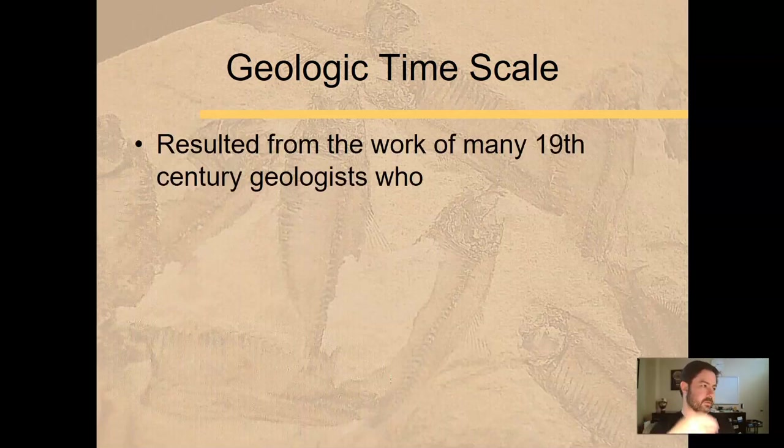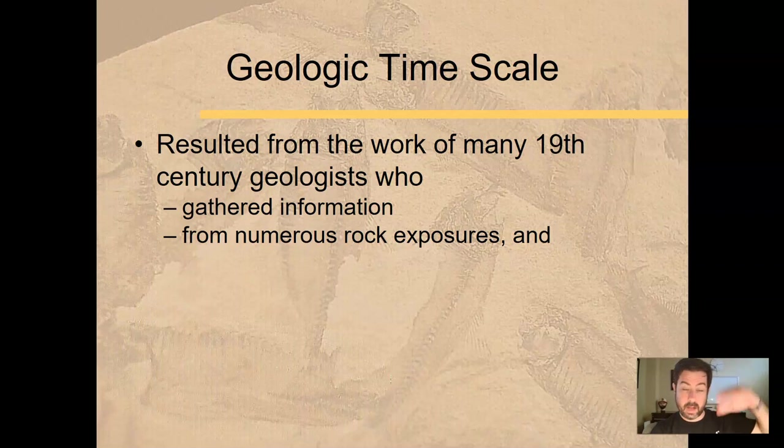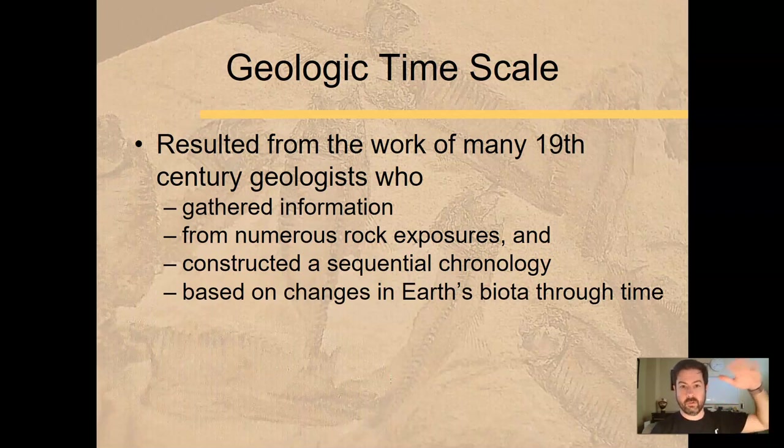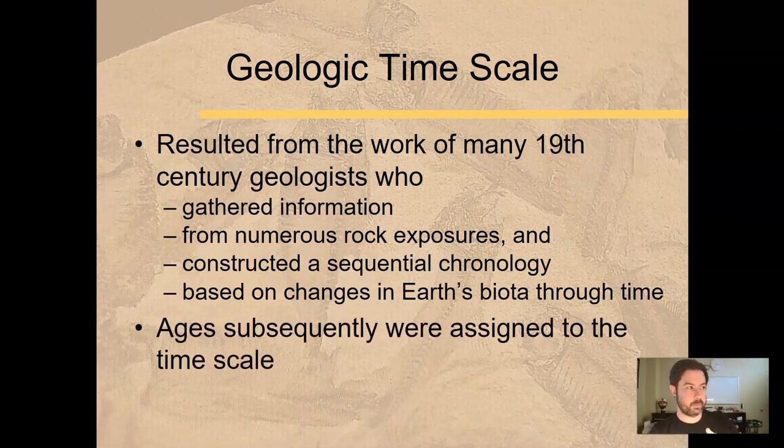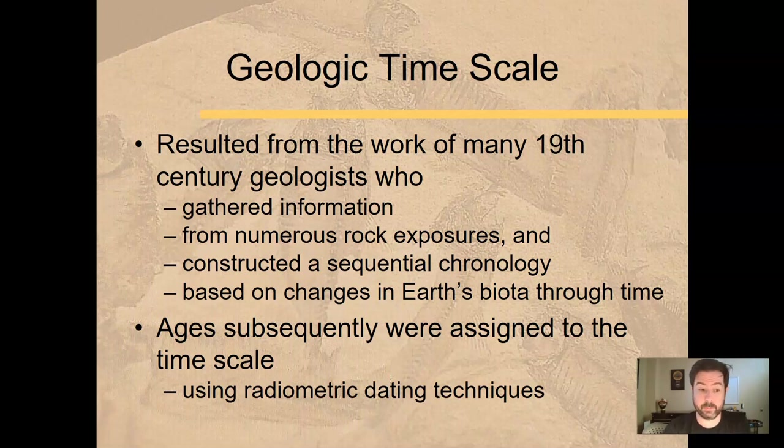So the way we figured all of this out is the results from the work of many 19th century geologists who gathered information from numerous rock exposures and constructed a sequential and chronological order of geologic time based on mostly change in earth's biota, biologic things, looking at fossils and other conditions we can see in rocks through time. And so we came up with something called the geologic time scale, putting earth's time on a scale reference that's tied to geology and biology. Ages were subsequently assigned to this time scale using radiometric dating techniques.